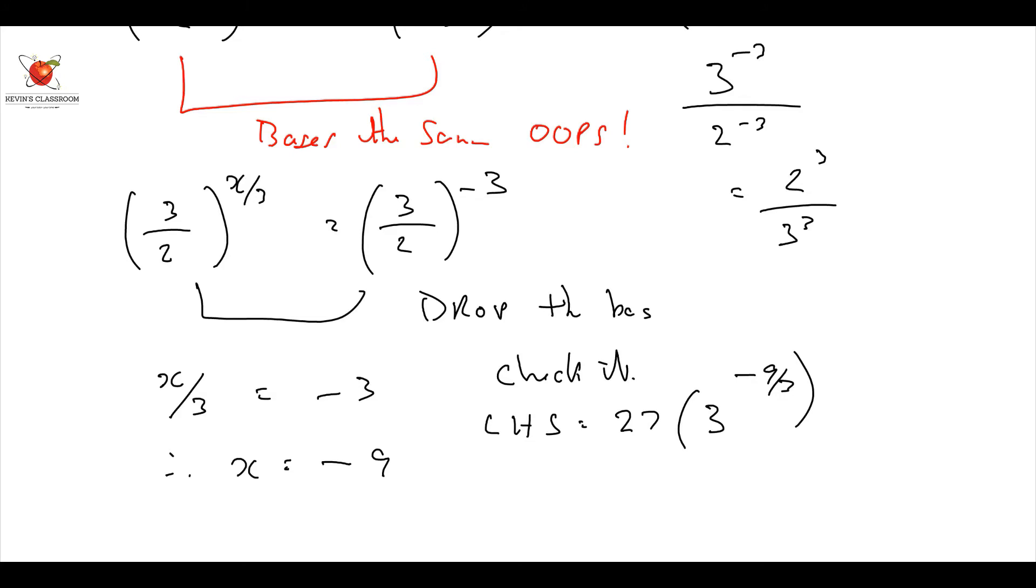Well, that's going to equal 1, isn't it? It's going to be 27 multiplied by what's 3 to the minus 9 over 3? 3 to the minus 3 which is 27 multiplied by 1 over 27 which equals 1.